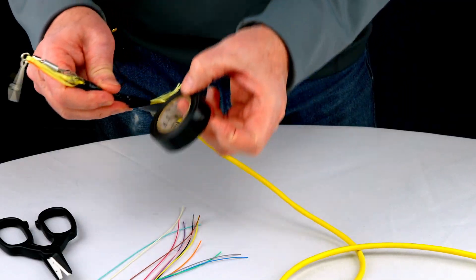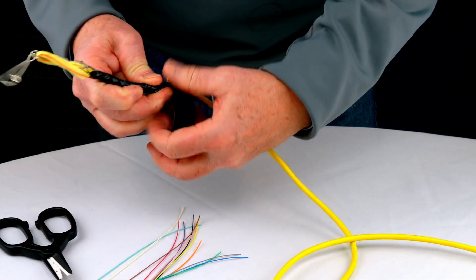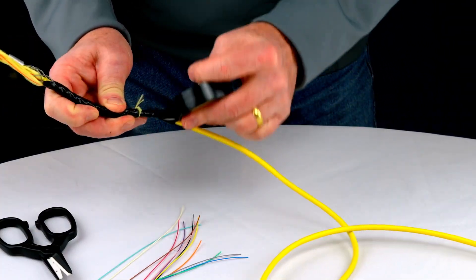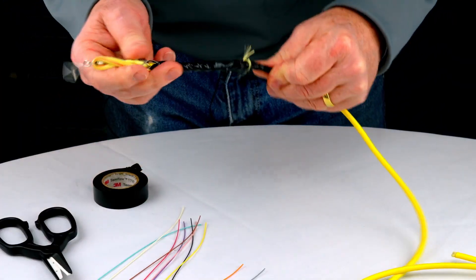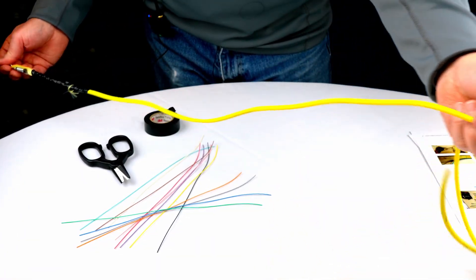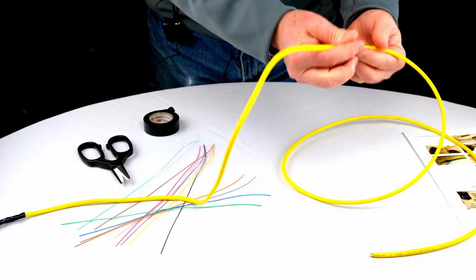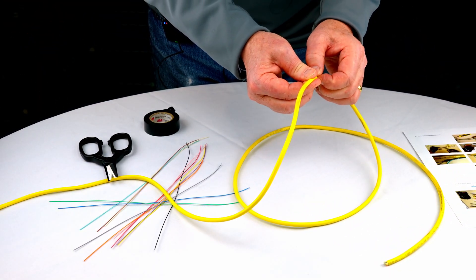This is going to give you a more secure pull. At the end of our pull, we're going to pull this in place, then measure back four feet and cut this cable. That's the beginning of where we're going to start terminating fibers. Any of this part is waste.